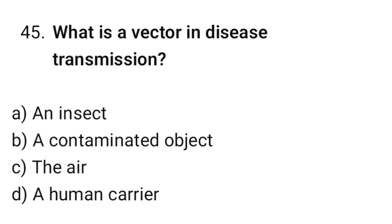Question number forty-five: What is a vector in disease transmission? The correct option is A, an insect.